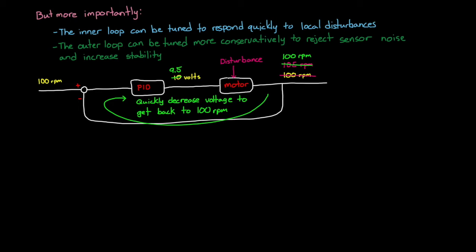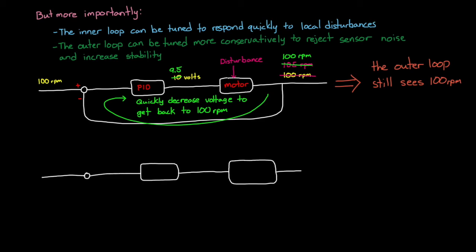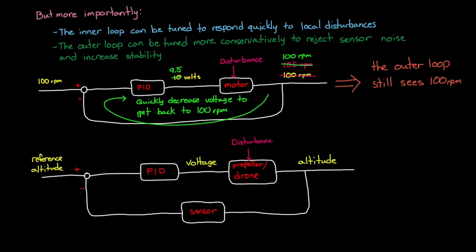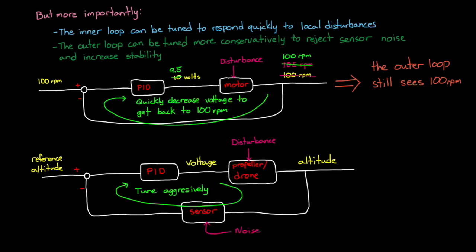If the inner loop is fast enough, then the motor disturbances wouldn't even be seen by the outer loop because there wouldn't be a noticeable change in altitude. This would allow the outer loop to be much slower and only respond to relatively slow disturbances like wind gusts. Now, if there was only a single loop, then the altitude controller would have to sense that tiny change in altitude and quickly adjust the motor voltage in that fraction of a second. If we tuned the outer loop to be that aggressive, then it would respond quicker to changes in altitude, but it would also respond quickly to altitude sensor noise, and that's not ideal. So it's a much better system to have these cascaded loops, with each loop targeting a different set of reference points and disturbances.